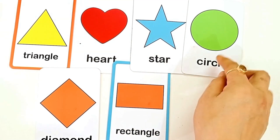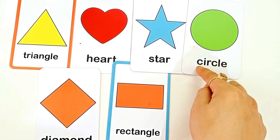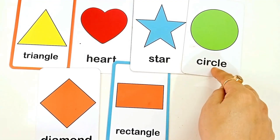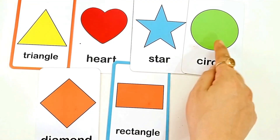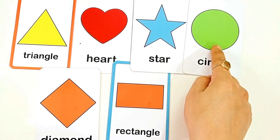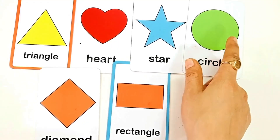C for circle. C-I-R-C-L-E circle. This is circle shape. And the color is green color.